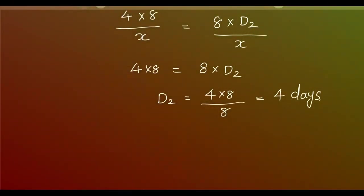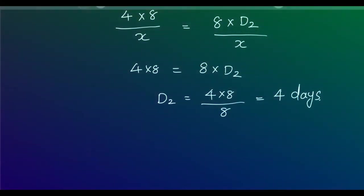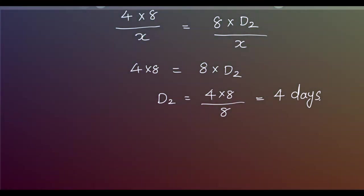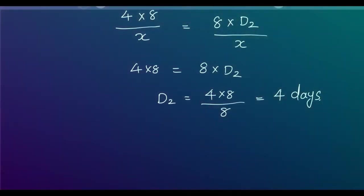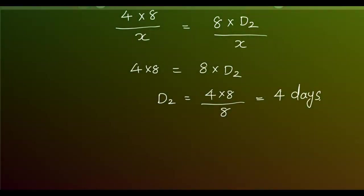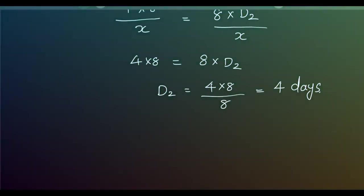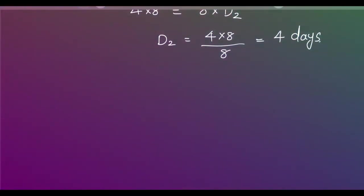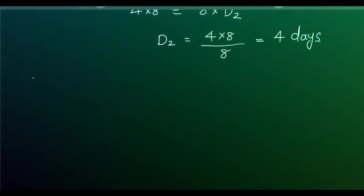This equation is very important: M1 men work D1 days each with H1 hours for a completed work, equal to M2 men taking D2 days and H2 hours for the same work. We equate both sides and find the unknown quantity. This is a very important formula and a sure question for competitive exams.